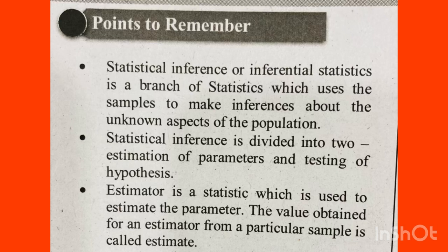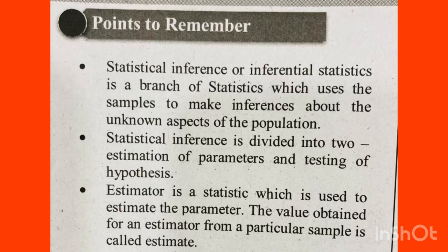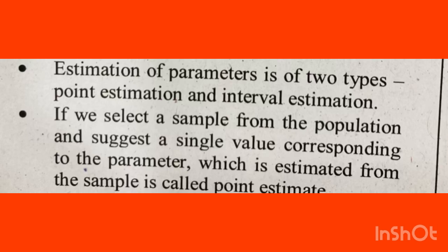Statistical inference has two types: estimation of parameters and testing of hypothesis. An estimator is a statistic which is used to estimate the parameter. The parameter is the population function. The sample function is the statistic, and the statistic is the estimator. The value obtained for an estimator from a particular sample is called the estimate.